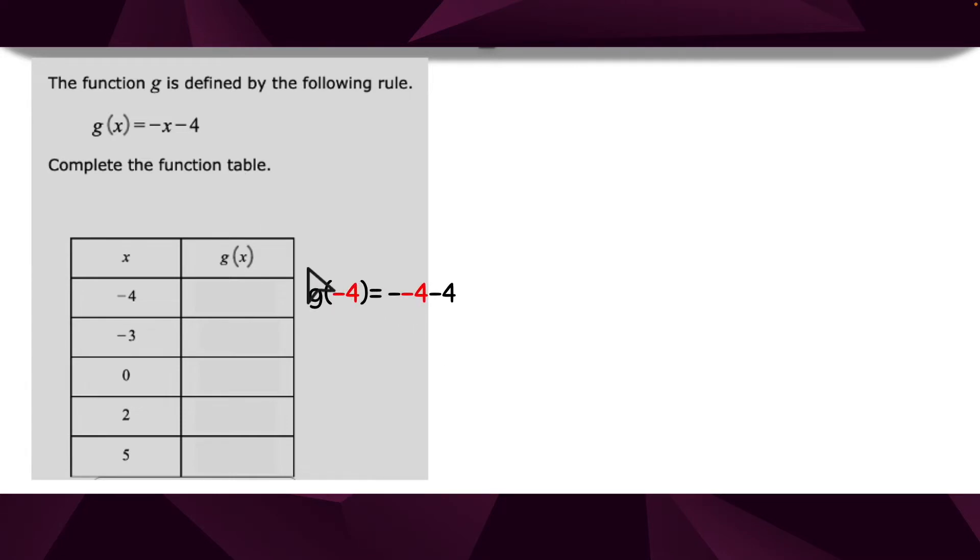So g of negative 4 equals negative negative 4 minus 4. Negative negative 4 is positive 4. 4 minus 4 is 0. Now I'm going to plug in negative 3. Negative negative 3 turns into positive 3. 3 minus 4 is negative 1. Now I'm going to plug in 0. Negative 0 doesn't change anything. 0 minus 4 is negative 4.